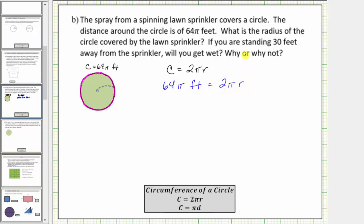To solve the equation for r, we would divide both sides by two pi. Simplifying on the right side, two pi divided by two pi is equal to one, one times r is equal to r.